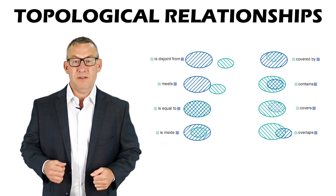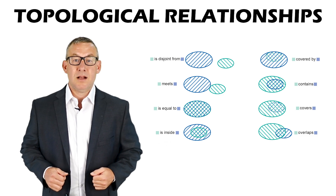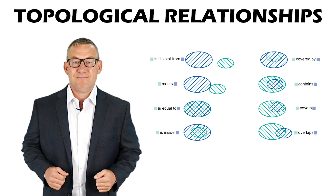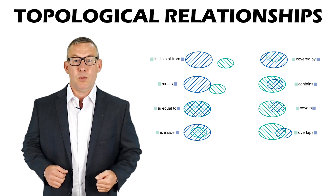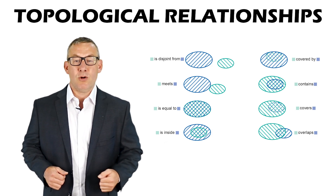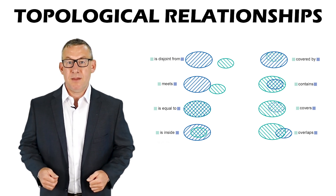Contains is when feature B is within feature A. Covers is when every point of feature B is a point of feature A. Covered By is when every point of feature A is a point of feature B. Within is when feature A is within feature B. Crosses is when feature A crosses feature B. Overlaps is when feature A and feature B have common interior points.